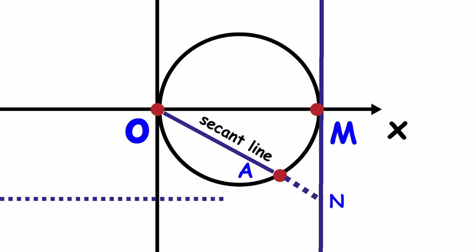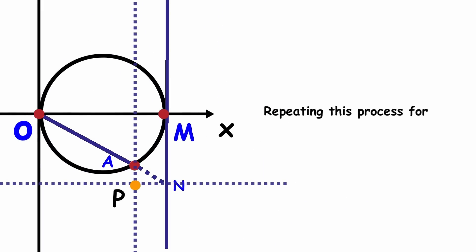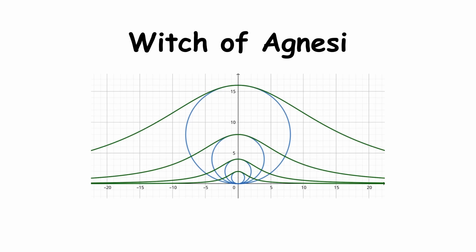Now, we'll draw a line through N that's parallel to OM, and a line through A that's perpendicular to OM. These two lines intersect at a point P, and with that we have a point P on our curve. Repeating this process for every possible choice of A on our circle, we get a curve known as the Witch of Agnesi.